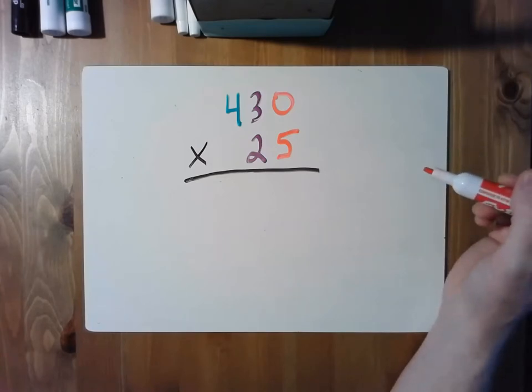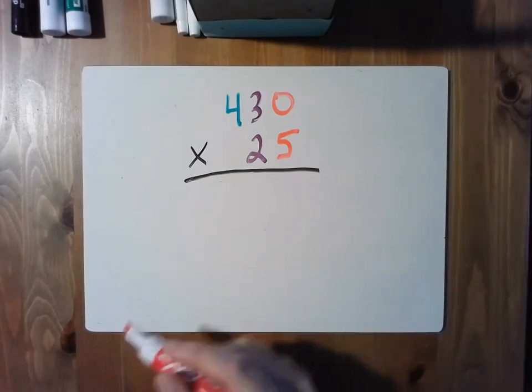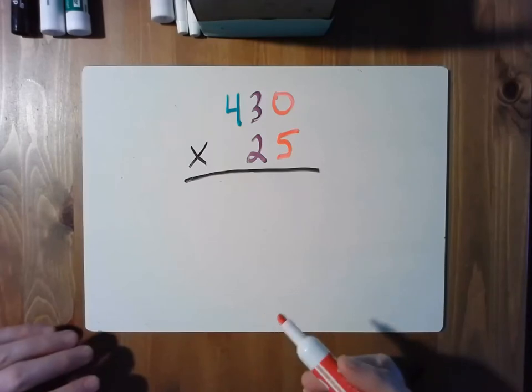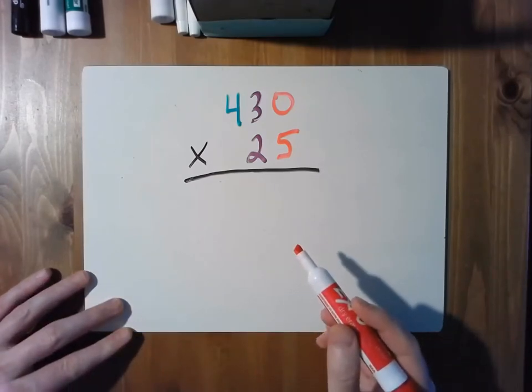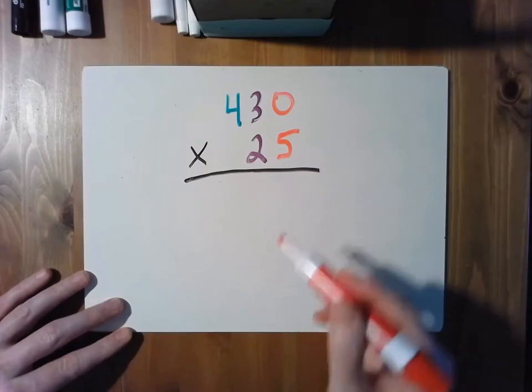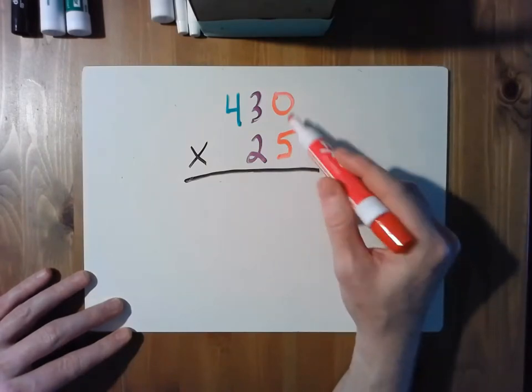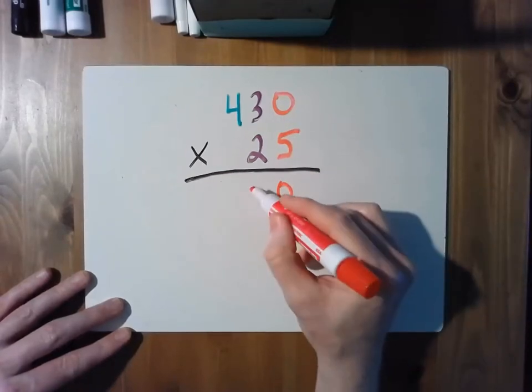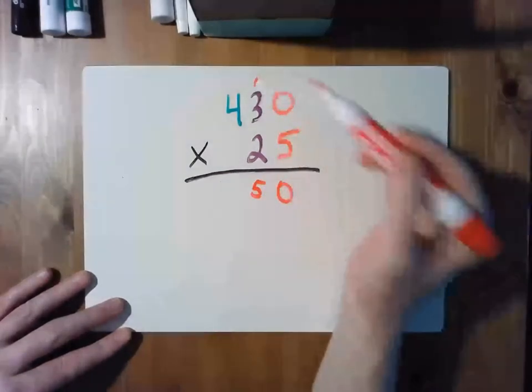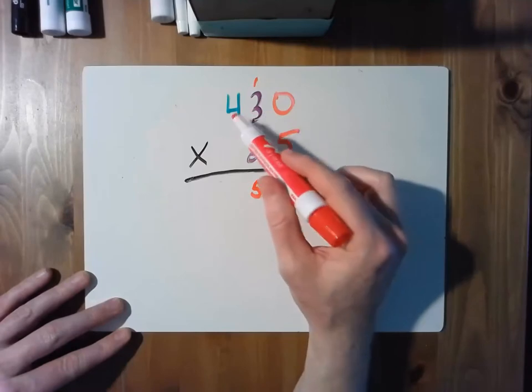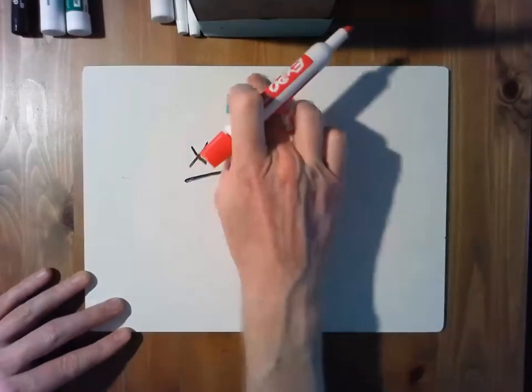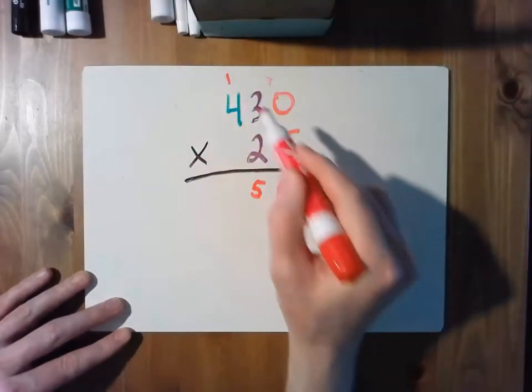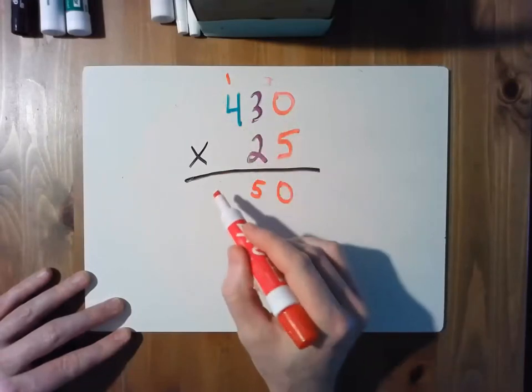For your peers who work this on paper, the conventional method, the standard algorithm, will be to multiply the 5 times the 0, you get 0. The 3 times the 5, you get 15, carry the 1. 4 times 5 is 20, plus 1 is 21.